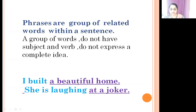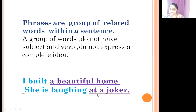So what is it? It is a group of words. 'A beautiful home' is a Phrase. In the sentence 'I built a beautiful home,' a beautiful home is a Phrase. Another example: 'She is laughing at a joker.'